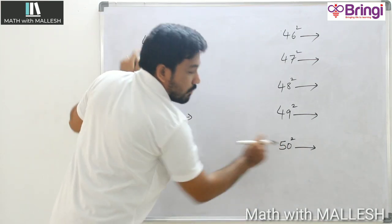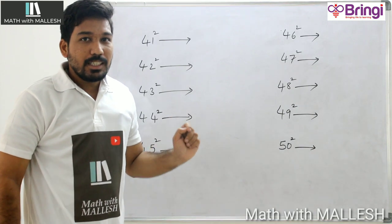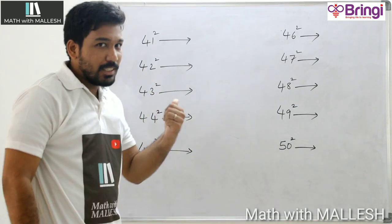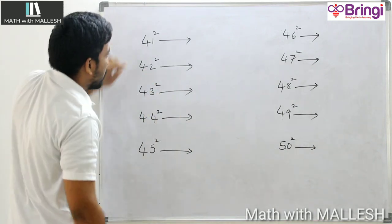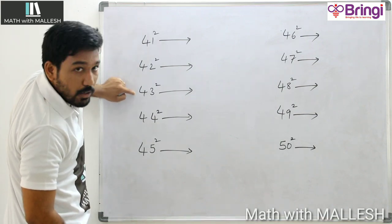From 41 to 50 in how many seconds? In just 2 seconds. Let us see how it will come: 41 square, 42 square.